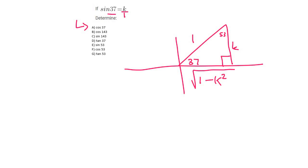Question a asks for cos 37. So cos 37 is adjacent over hypotenuse, which is going to be the square root of 1 minus k squared over 1, which is just the same as the square root of 1 minus k squared.